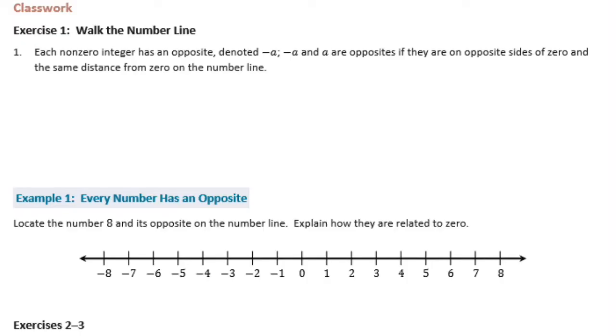Each non-zero integer has an opposite, denoted negative a. Negative a and a are opposites if they are on opposite sides of 0 and the same distance from 0 on the number line.